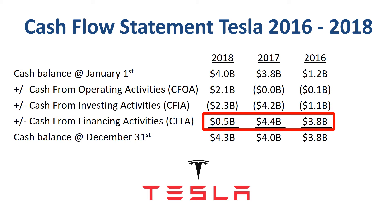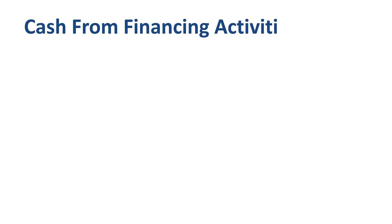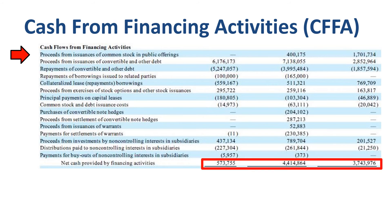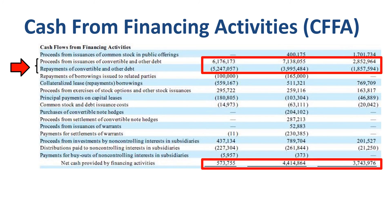Third section of the cash flow statement: cash from financing activities. There was $1.7 billion cash inflow from issuing common stock or equity in 2016, $400 million in 2017, and $1 billion in 2016, $3.1 billion in 2017, and $1 billion in 2018 as the net cash inflow between proceeds and repayments of convertible and other debt. In total, Tesla still did have a cash inflow from financing activities in 2018, but by far not as big as the huge funding years of 2016 and 2017.